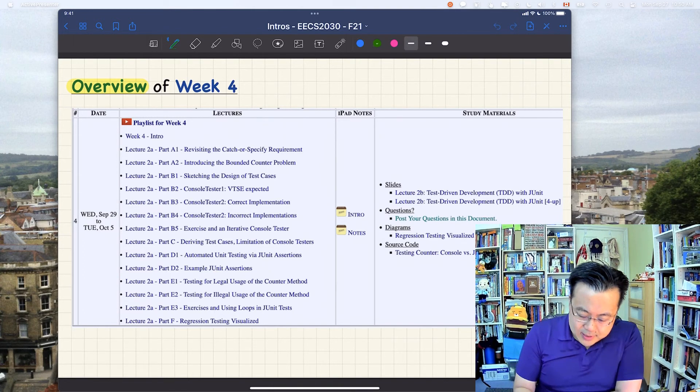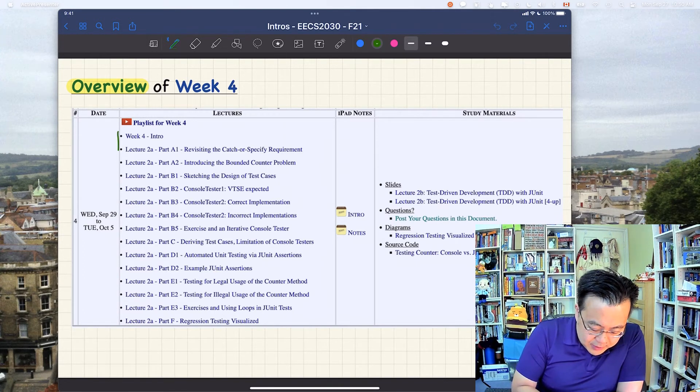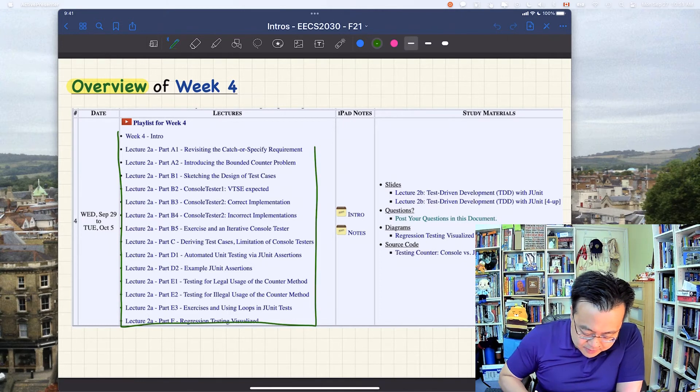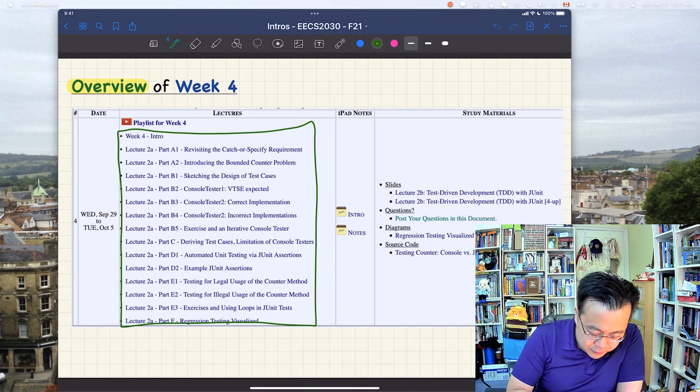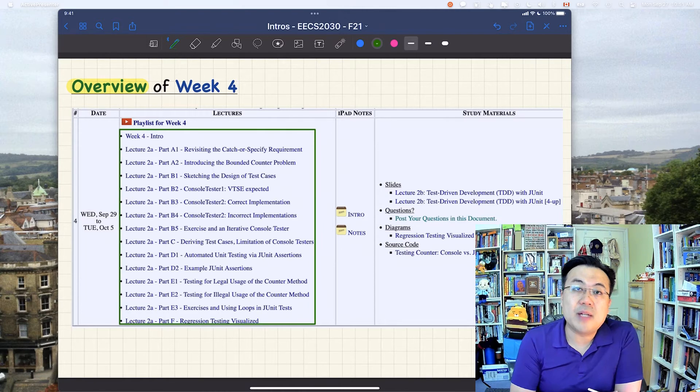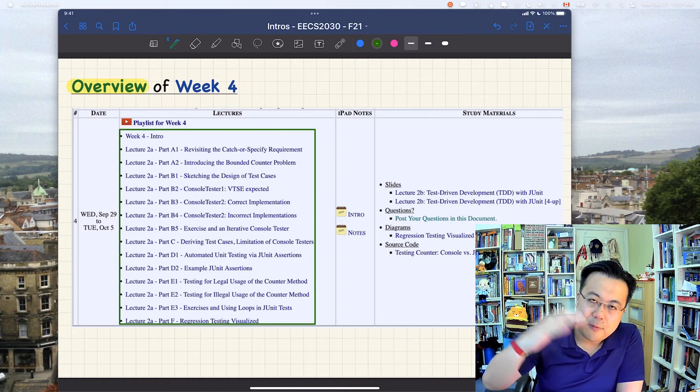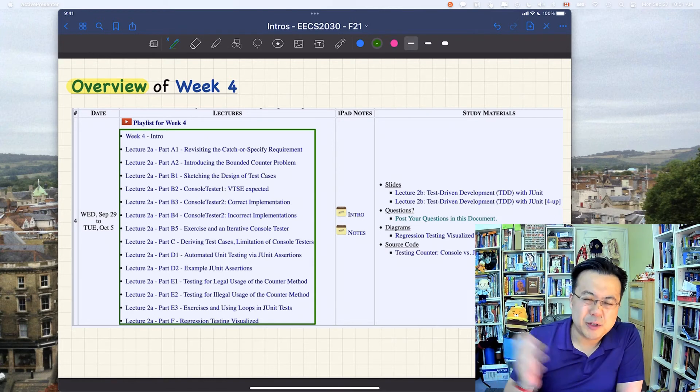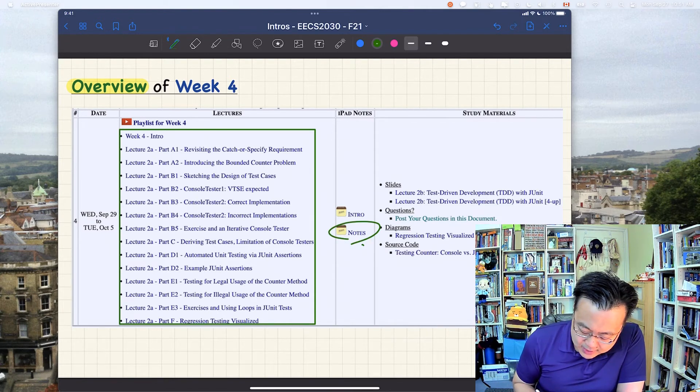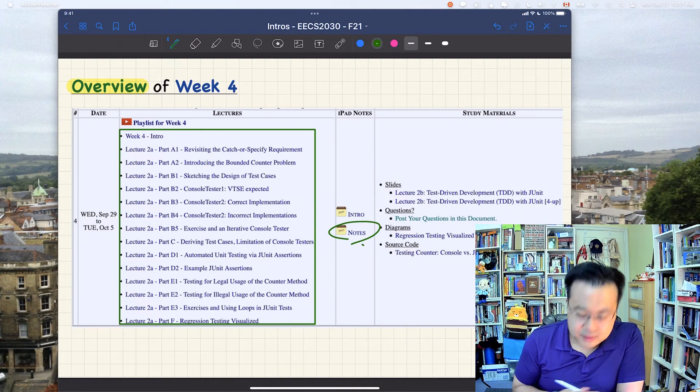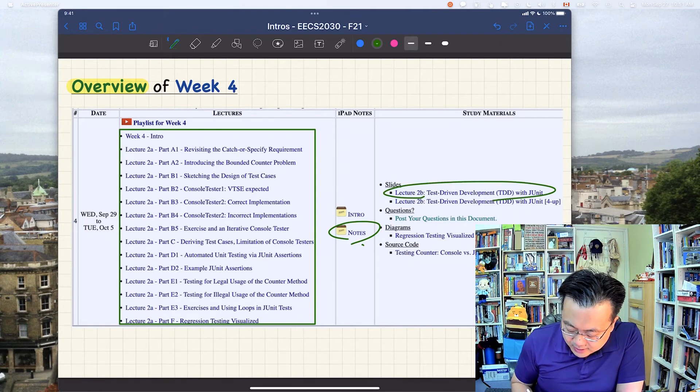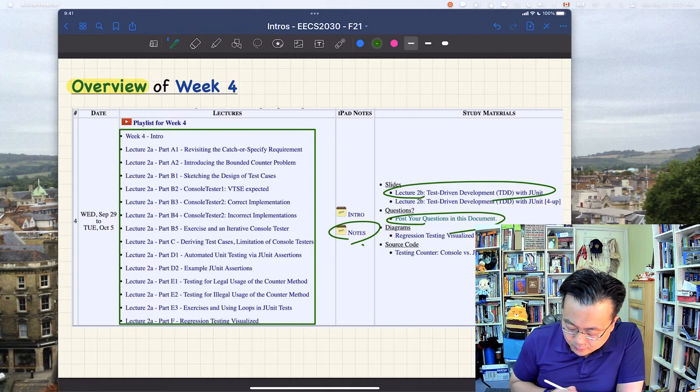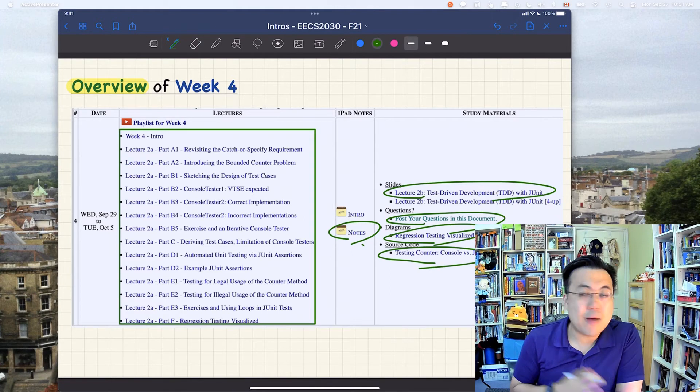So about the videos I just mentioned, you got 14 of them, right? You want to study between two to three video clips every day. And I didn't really exceed the time. It's about three hours, roughly, plus minus 15 minutes or so. We got the notes, visual notes. We got the slides, and also we got Google Doc for posting questions. We got a diagram, and also we got source code. So everything is here.